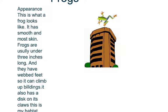This is what a frog looks like. It has smoother and moister skin. Frogs are usually under three inches long and they have webbed feet so it can climb up buildings. It also has a disc on the tip of its tongue and the tip of its claws.